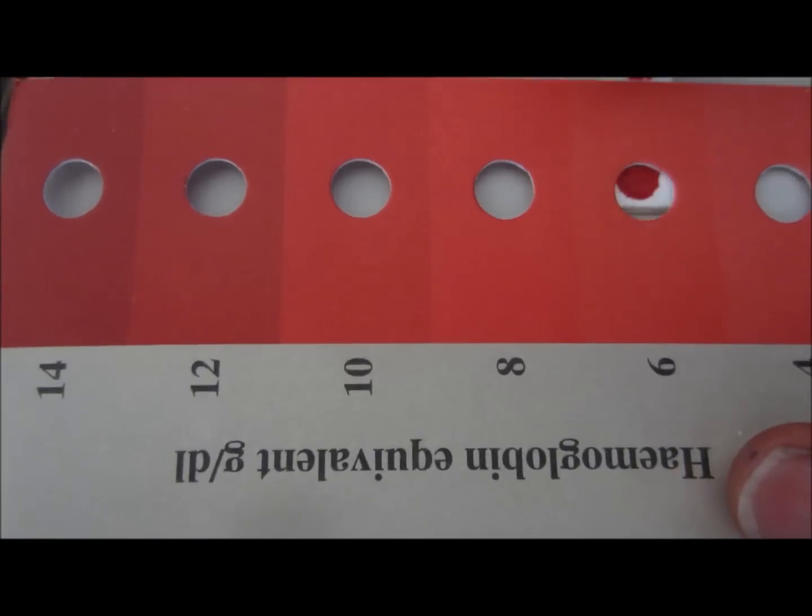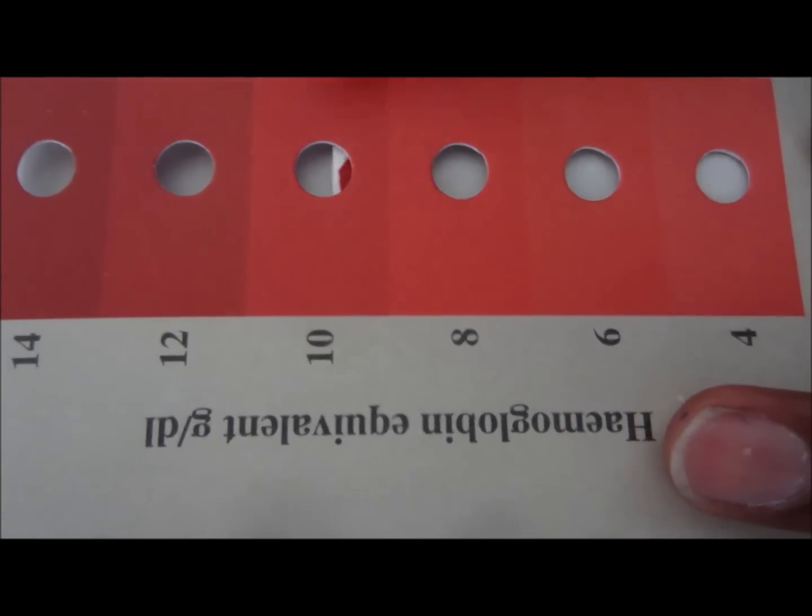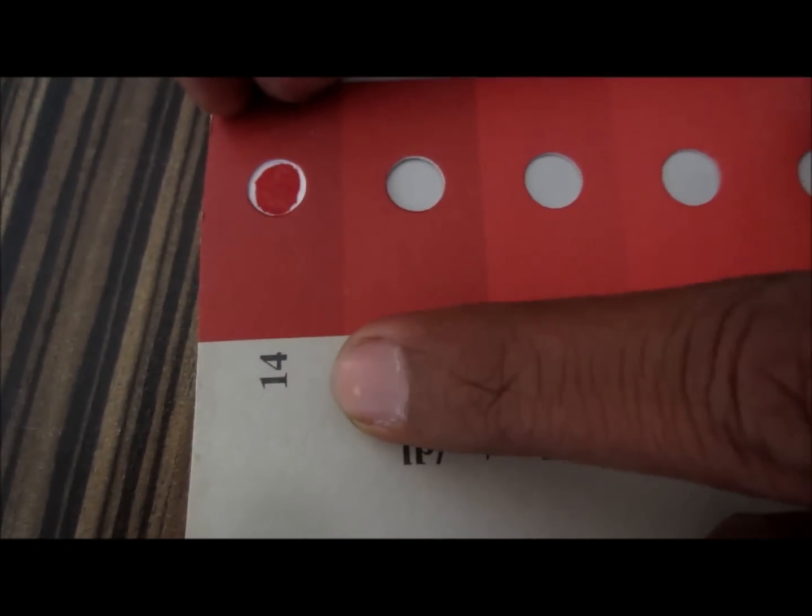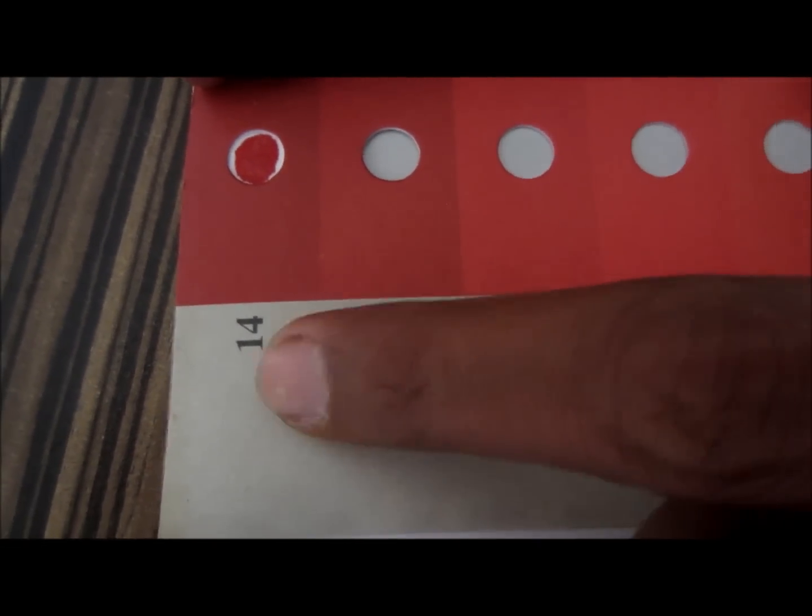For example, the six color is quite light as compared to the blood that we have in the strip. Now it's nearly equivalent to the 14, so the value is 14 grams per deciliter.